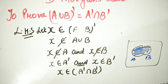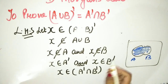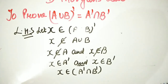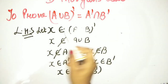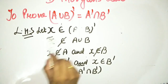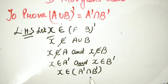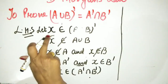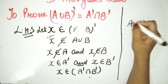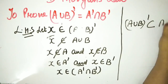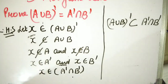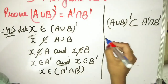So x doesn't belong to A and x doesn't belong to B. This implies that x belongs to A complement intersection B complement. So what did we do? We took an element from the left hand side and reached the right hand side. This means A union B complement is a subset of A complement intersection B complement.